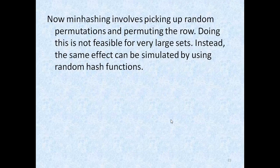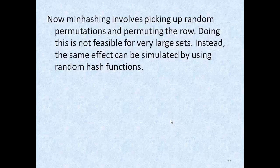Minhashing involves picking a random permutation, but the number of permutations of a set of size N is N factorial — a very large number even for N equals 50. So generating all permutations and picking one is not feasible. Instead, we replace a random permutation with a random hash function.